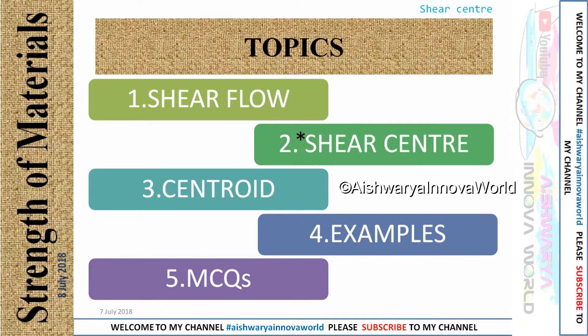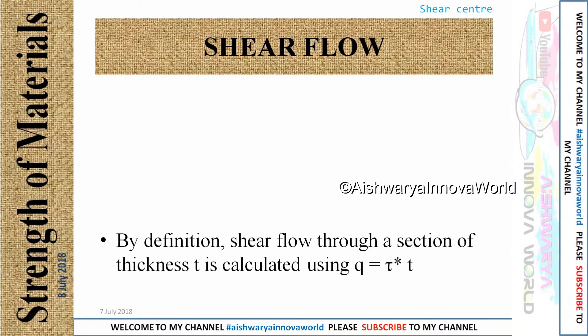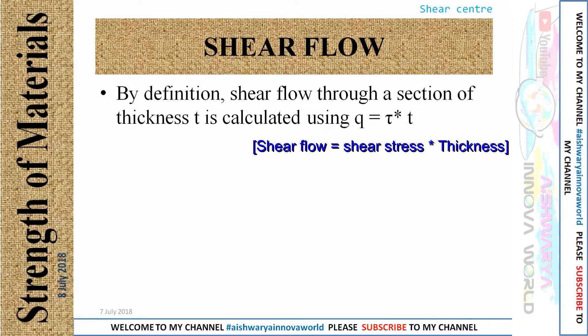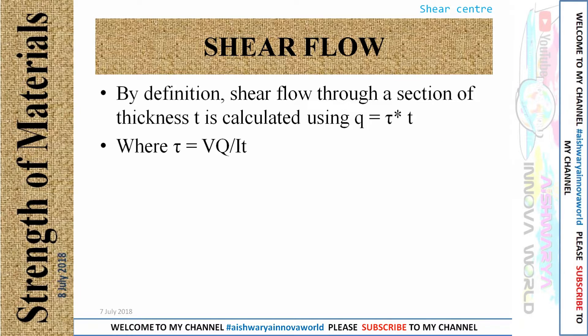First, I will cover shear flow. Shear flow is denoted by the letter Q. Shear flow through a section of thickness is calculated using the product of shear stress and the thickness: Q equals tau into T. Tau is the shear stress, which equals VQ divided by IT.